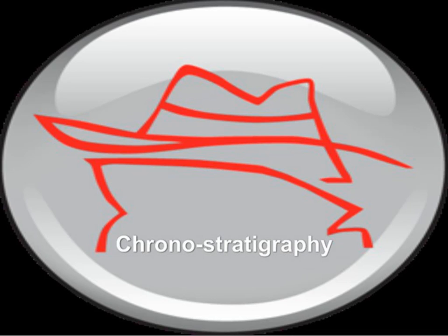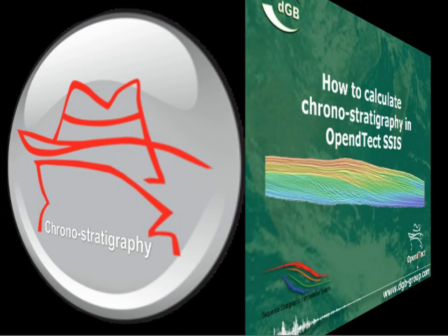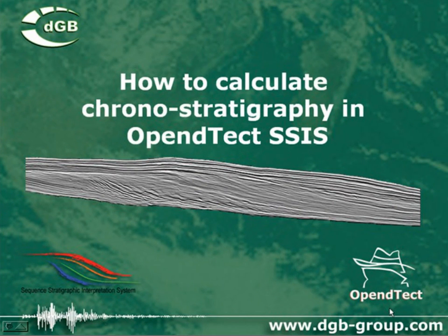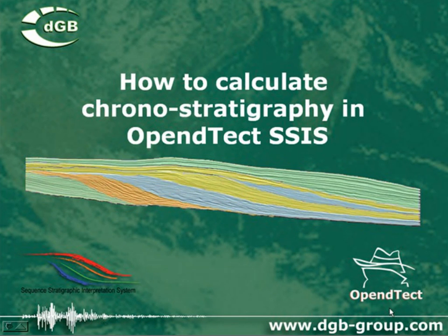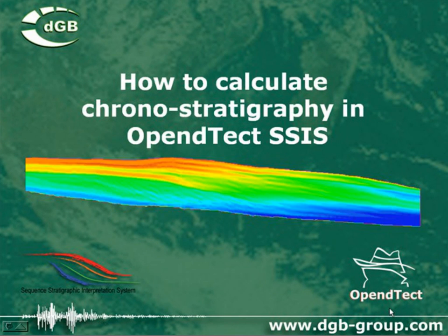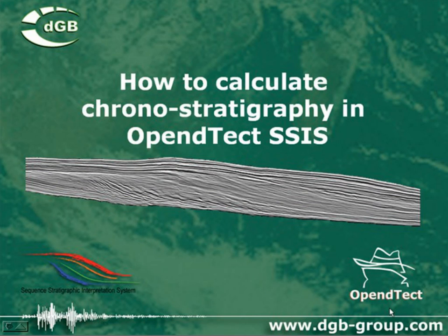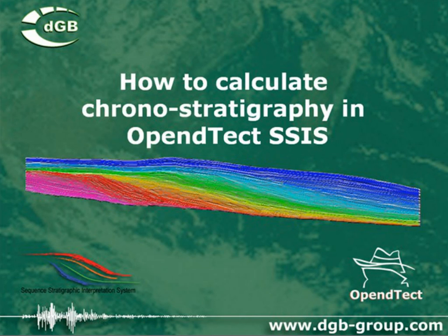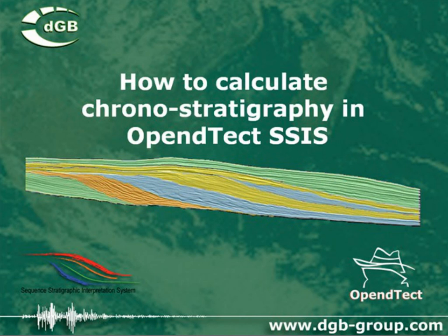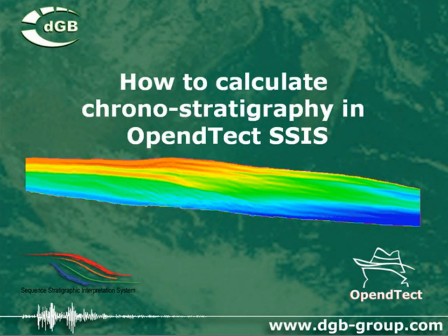In this tutorial we learn how to calculate grounor stratigraphy in OpenDetect Sys. Grounor stratigraphic horizons in Sys are geologic timelines that are tracked or modeled every few milliseconds inside a framework bounded by conventionally mapped horizons. Sequence stratigraphic interpretation in Sys depends to a large extent on the quality of the grounor stratigraphy. In this tutorial we will therefore also look at ways to improve the grounor stratigraphy.